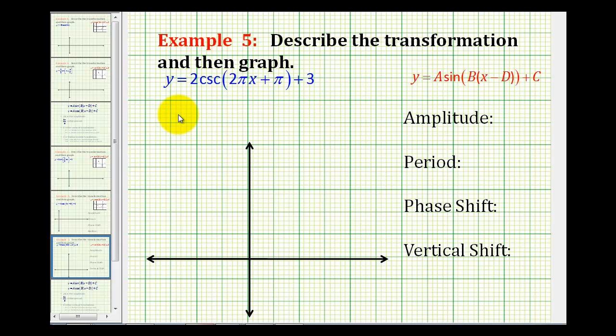Welcome to the fifth example of describing and graphing trig transformations. This one deals with the cosecant function. We have y equals two cosecant of the quantity two pi x plus pi plus three.